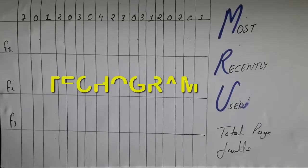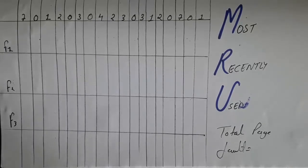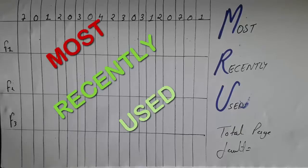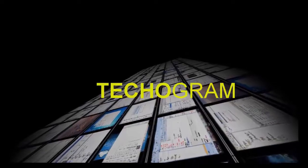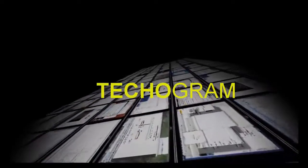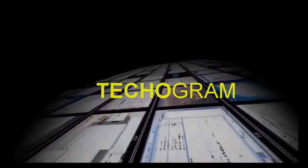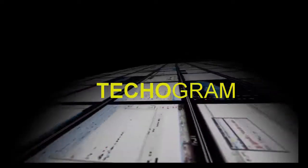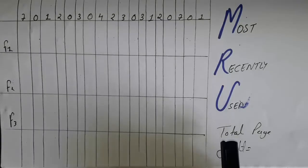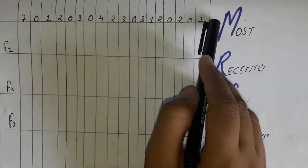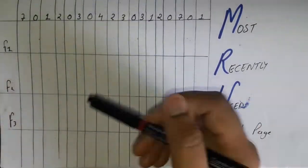Hey guys, welcome back to DecoGram. Today we are going to learn the third method of the page replacement algorithm, which is Most Recently Used. We have to find the total page fault. This is our reference string and these are our three frames.